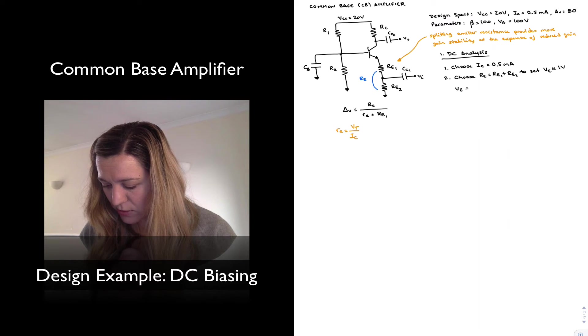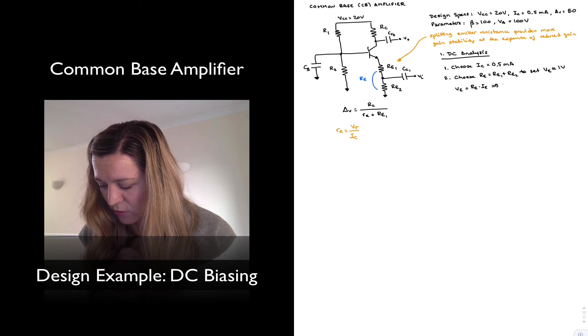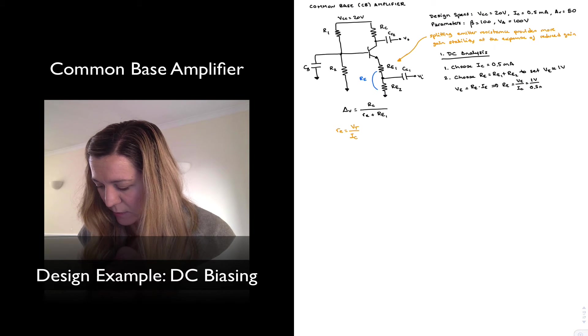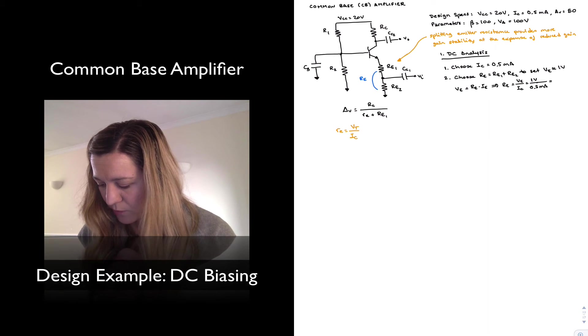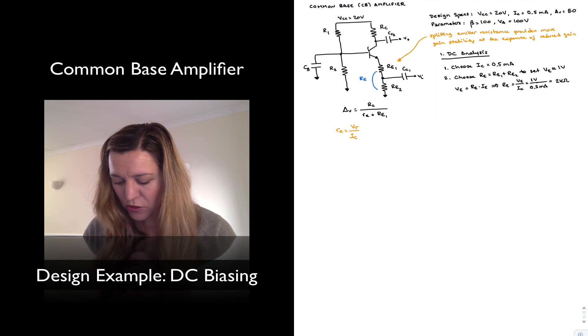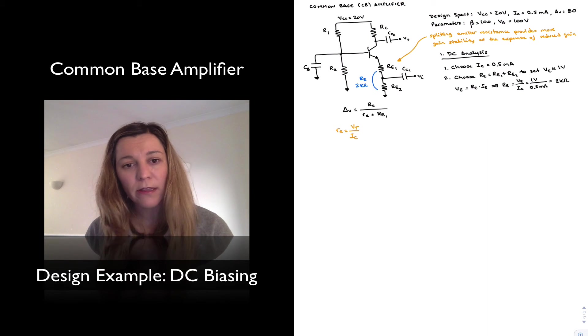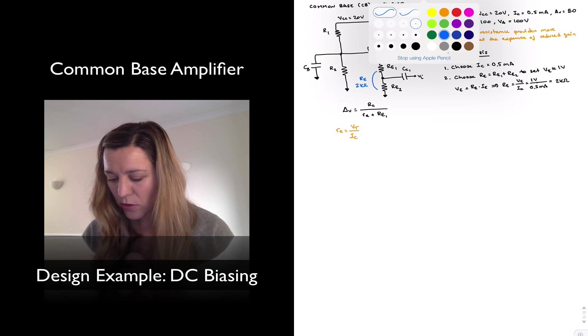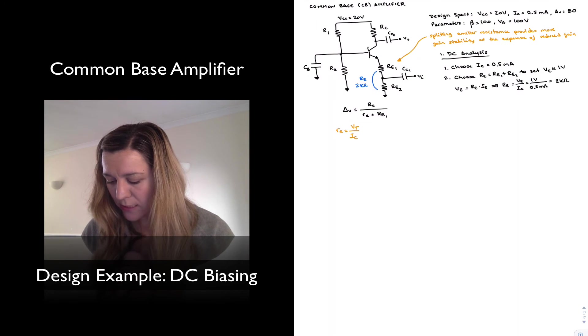My VE is going to be equal to RE times IE. If I want VE to be equal to one volt, then my RE is going to be equal to one volt divided by 0.5 milliamps, or two kilo ohms. So I know my series combination will be two kilo ohms, and I'll figure out later how to split that between RE1 and RE2 when I'm setting my gain.